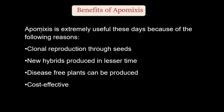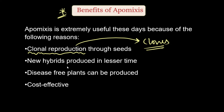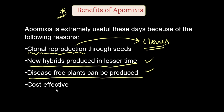Now let us look at the benefits of apomixis. First and foremost, apomixis enables clonal reproduction — it helps produce clones. Second, new hybrids can be produced in lesser time. Third, disease-free plants can be produced. Finally, plants produced through apomixis are cost-effective.